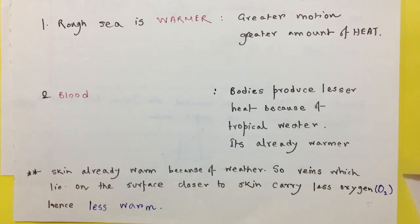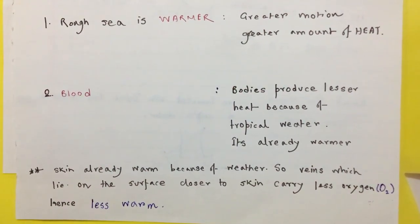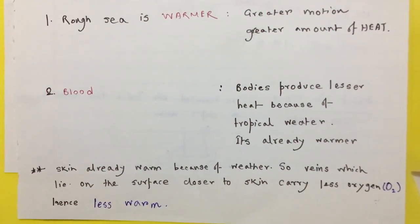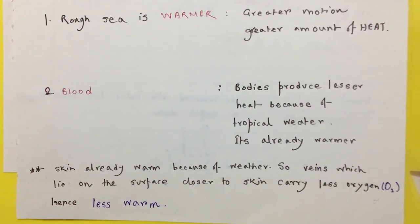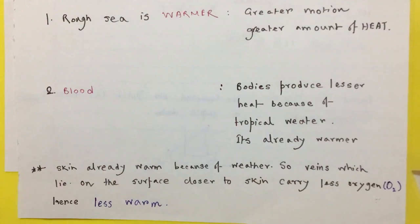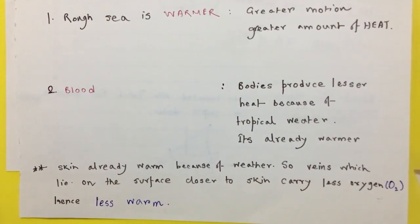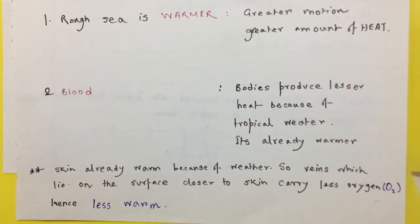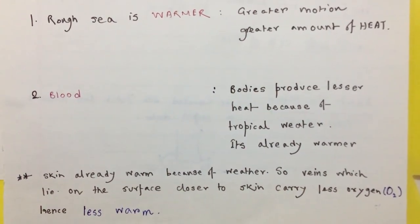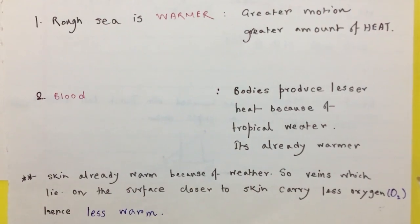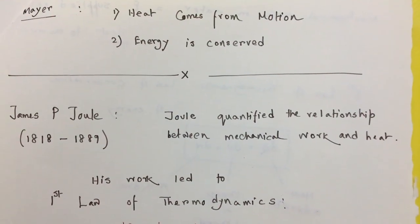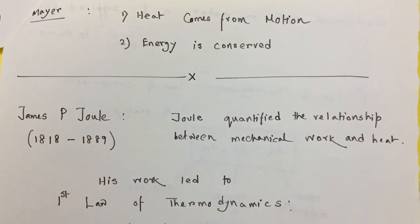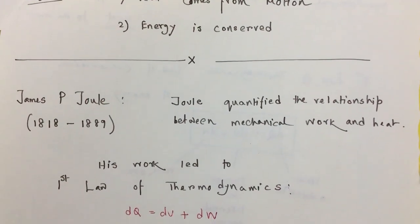So he made two very important observations during traveling in tropical region. First one is rough sea is warmer, so from that he concluded that greater motion leads to greater amount, larger amount of heat. And as there is a color difference between venous and arterial blood, so there must be energy conservation. Meyer did two great observations. He observed and concluded that heat comes from motion and energy is conserved.